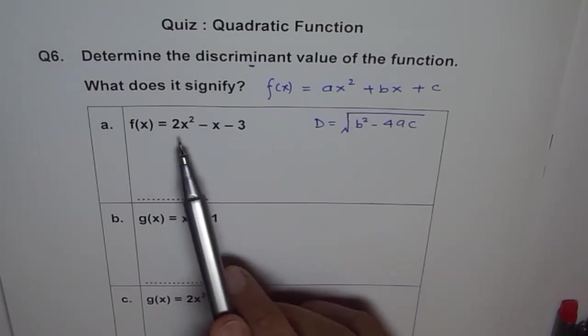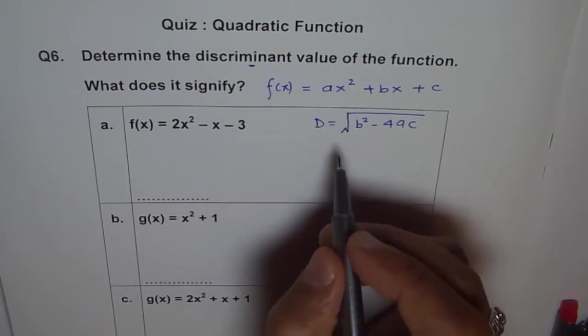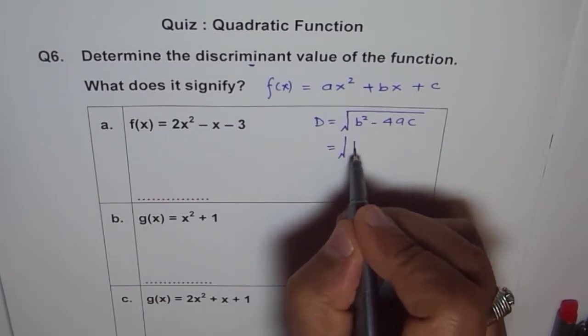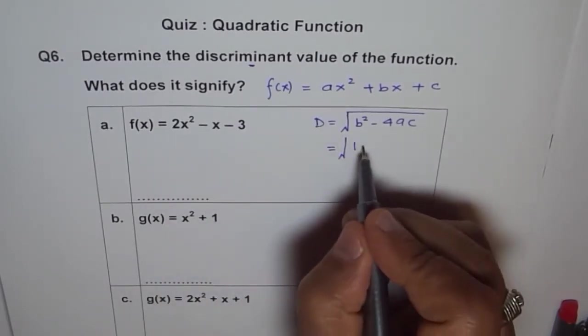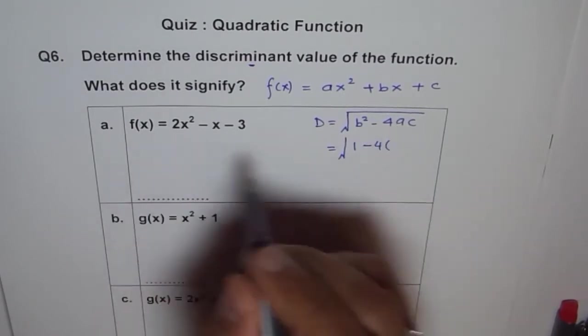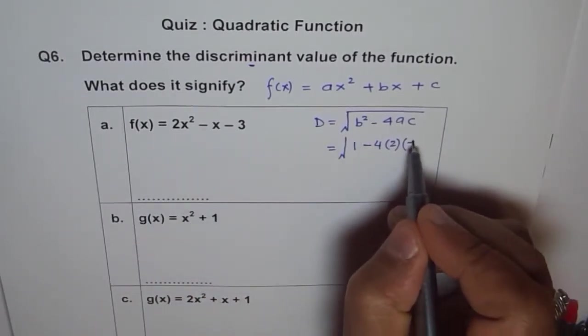Now to calculate for part A, what is b? b = -1. So (-1)² = 1, minus 4 times a which is 2, times c which is -3.